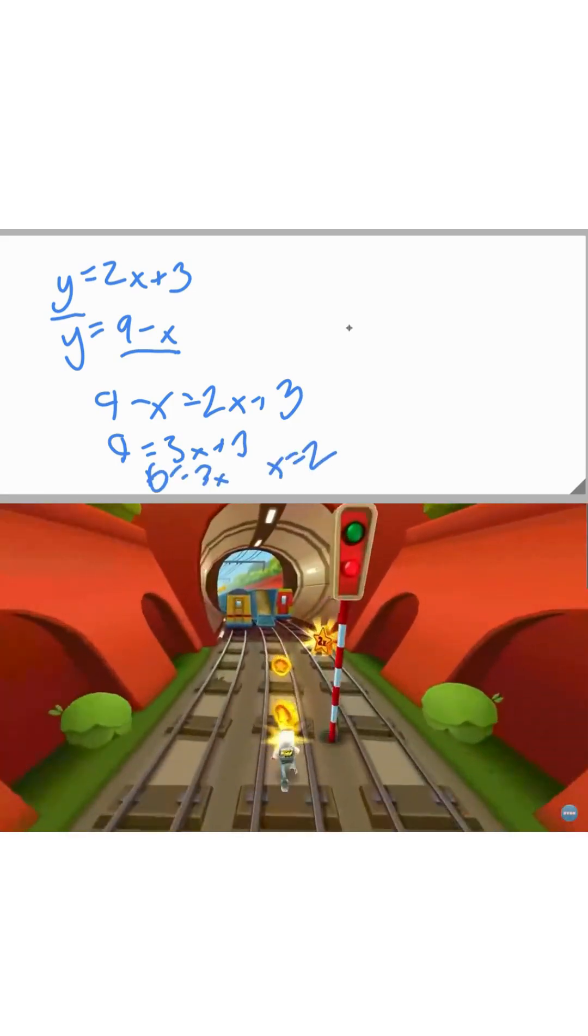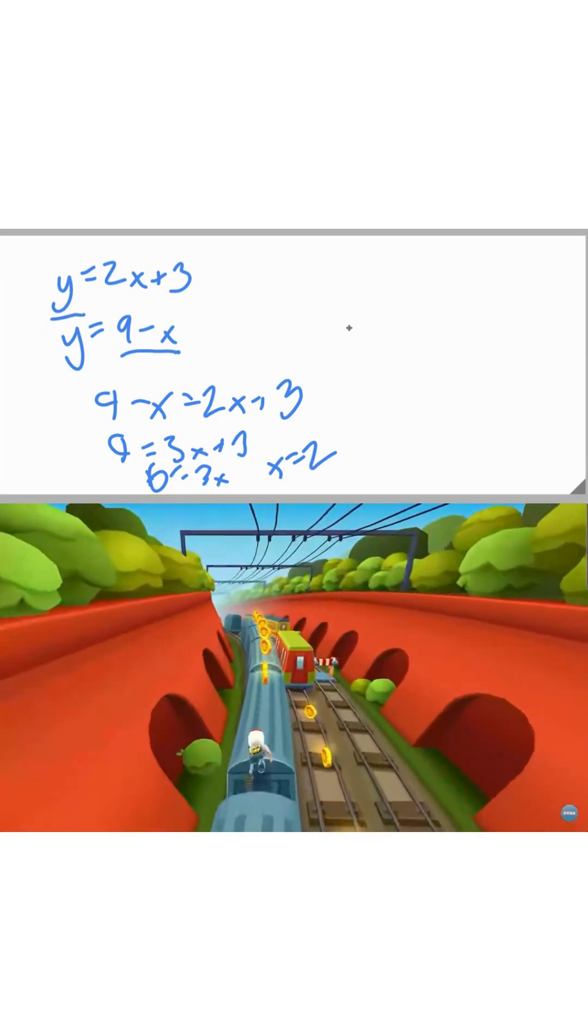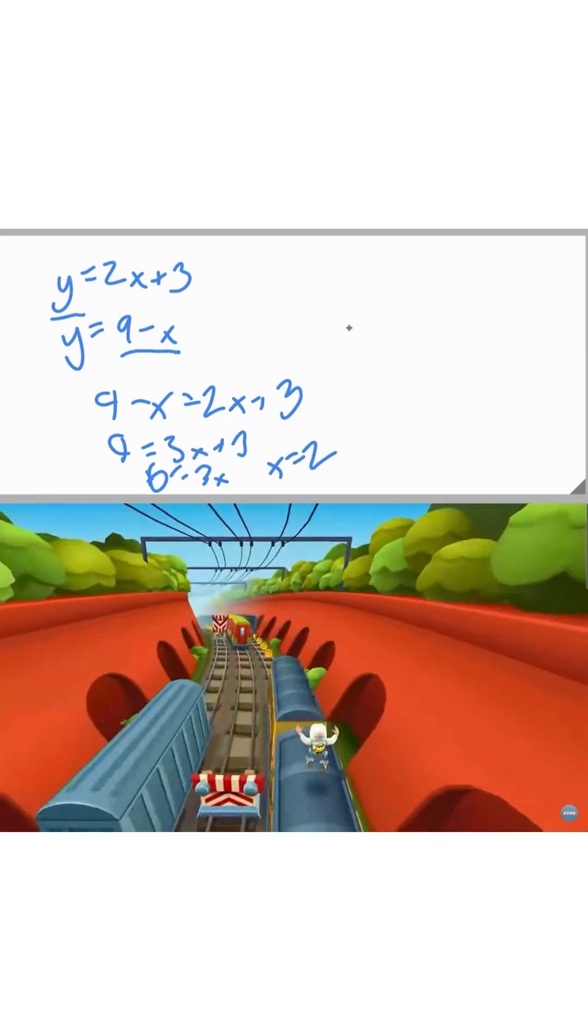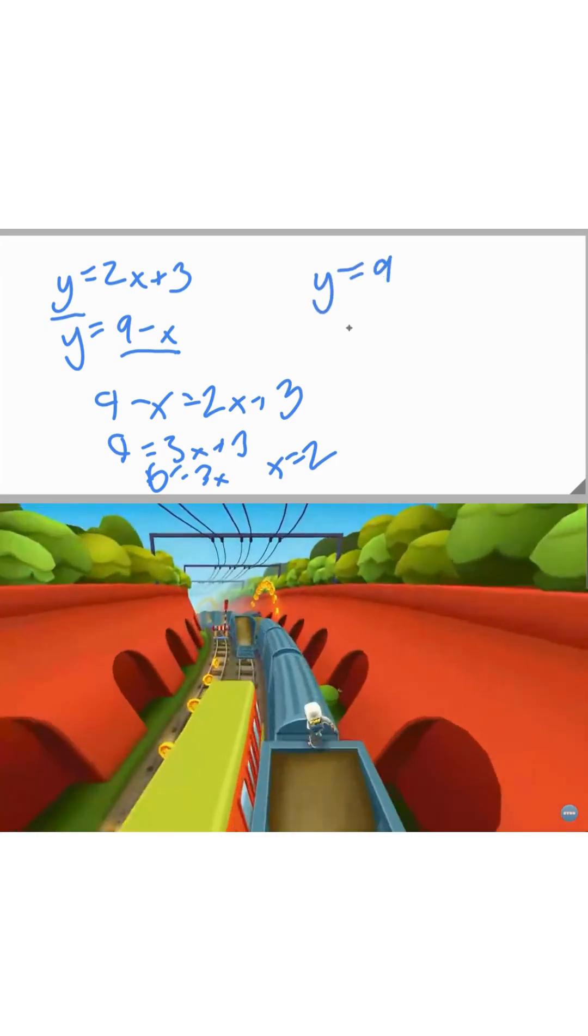But that only tells us one variable x. To complete the problem we still need to find y, so we take one of the original equations like y equals 9 minus x.